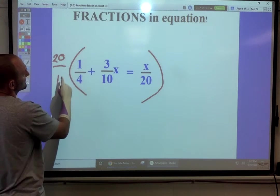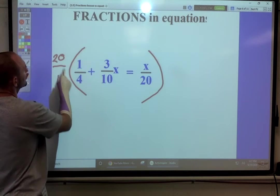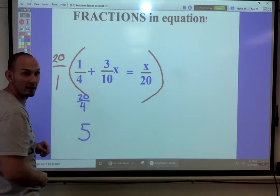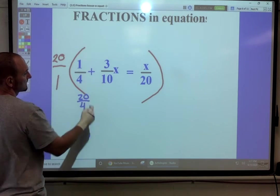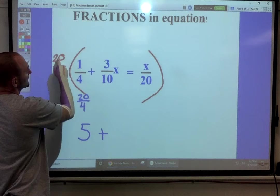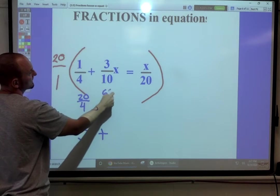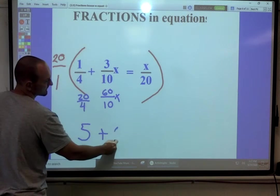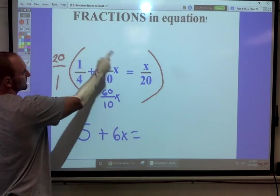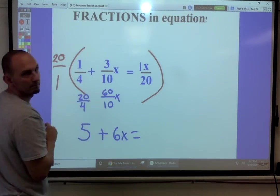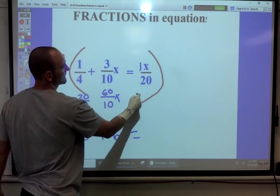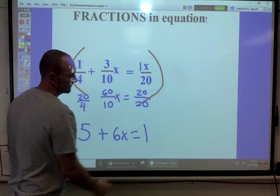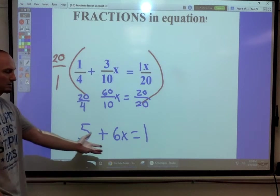20 times 1 is 20. This actually becomes 20 and 1 times 4 over 4, which is actually the whole number 5. It's positive plus 20 times 3 is 60. 1 times 10 is 10. That's really 6x. Same thing over there. That's like a 1. 1 times 20 is 20. That's actually the whole number 1. And now you can solve your equation.